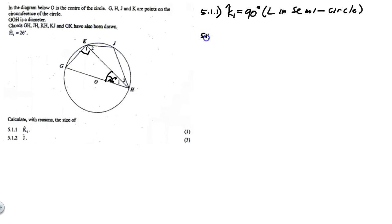So we know that K1 is equal to 90 degrees. Now for 5.1.2, they want us to find J. So there's J over here. Now if you look at this, K, J, H, and G, what is that figure called? It's a cyclic quadrilateral.